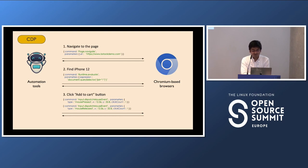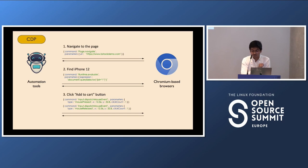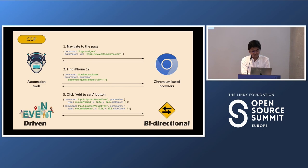In the same previous example viewed from the CDP perspective, the automation tools send commands directly to the browser: page.navigate followed by the URL to navigate; runtime.evaluate passing a parameter with ID equal to one to find the iPhone 12; and to click the Add to Cart button, two commands — press the mouse button and release the mouse button. The advantage here is that when the element finishes loading and generates an event, that event can travel back to the automation tool because the connection is through WebSockets, which are bidirectional. In short, CDP is event-driven and bidirectional.